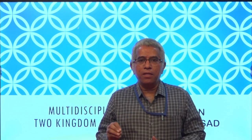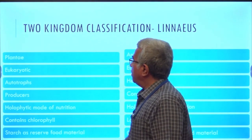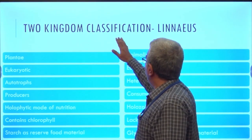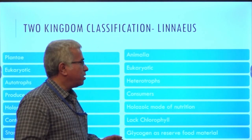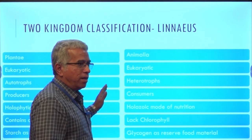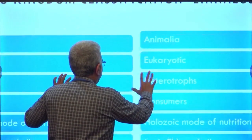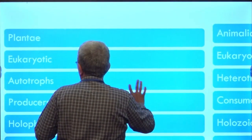Let us learn one more topic under multidisciplinary topics, namely two kingdom classification. Two kingdom classification includes only two types of organisms, namely Plantae and Animalia. This two kingdom classification was proposed by Linnaeus, and it includes only two kingdoms: one is Plantae and another one is Animalia.